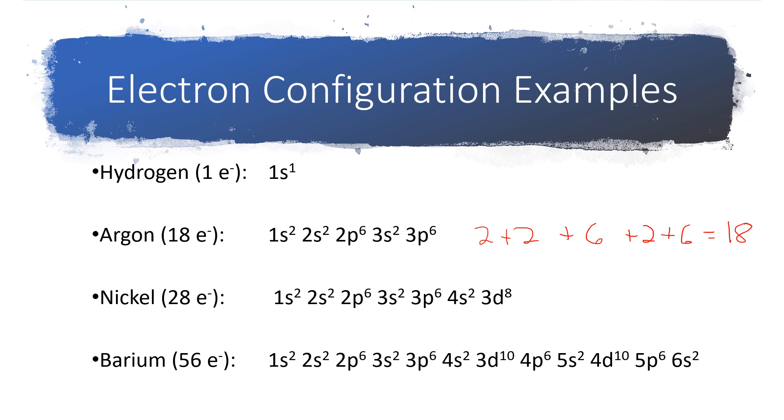Sometimes, like in the case of hydrogen that ends with that 1s1, we have an unfilled subshell. Also in the case of nickel, we had an unfilled subshell. D can hold as many as 10. But nickel didn't need that many. It doesn't have 30 electrons. It only has 28. So we stop when we get to that 28th electron.